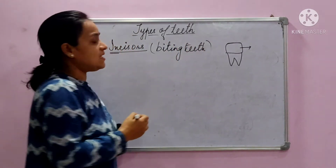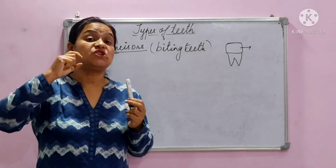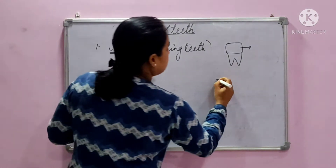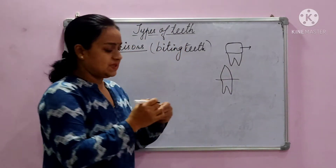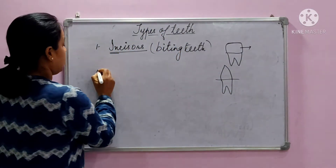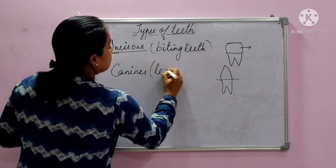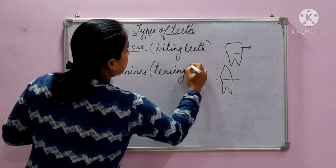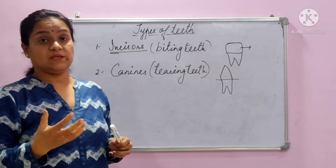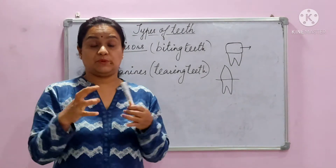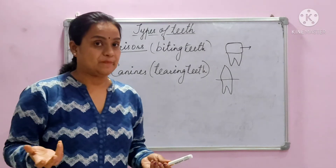After incisors, on the side of your mouth, you will see some sharp-edged teeth — the top is sharp. These are canines. Canines are the tearing teeth; they help to tear hard, strong food such as meat and flesh. If you see carnivorous animals like lions, tigers, leopards, and crocodiles, their canines are very sharp and large in number.